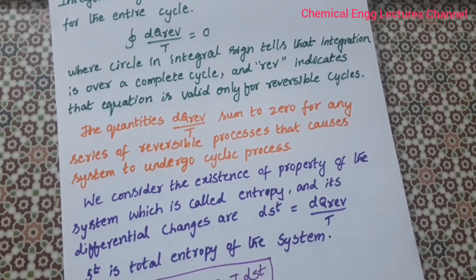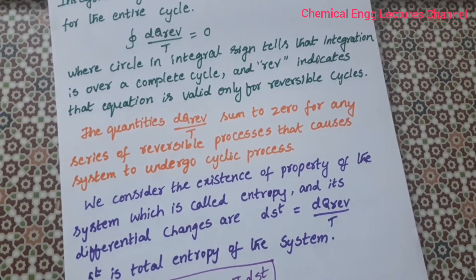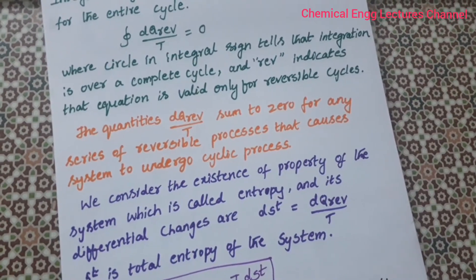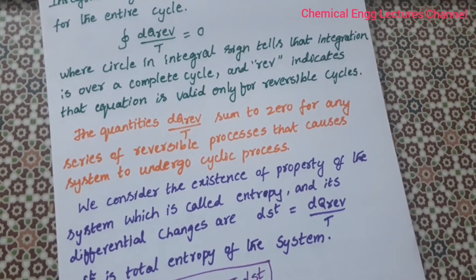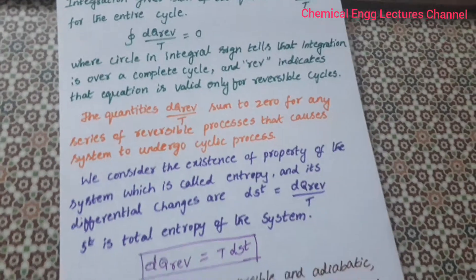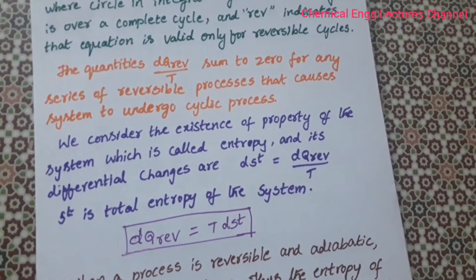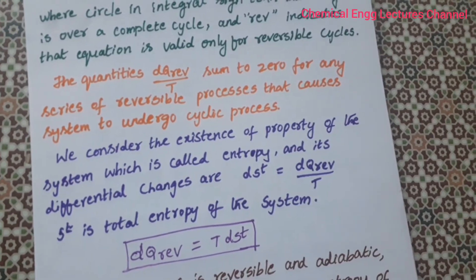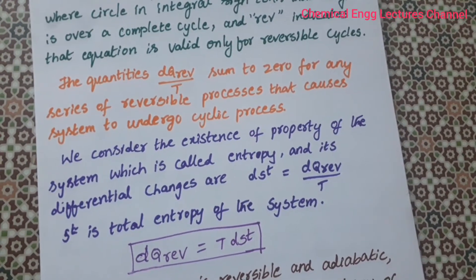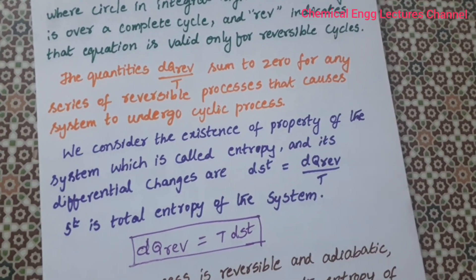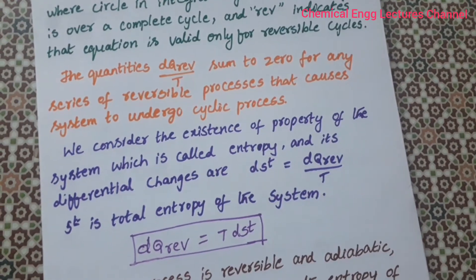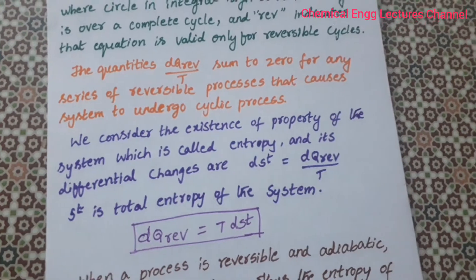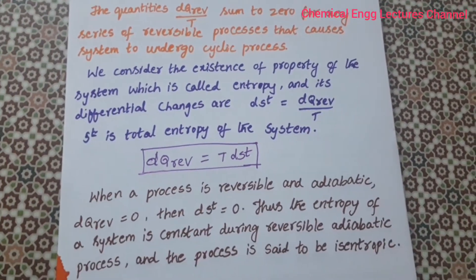The quantities DQ reversible by T sum to 0 for any series of reversible processes that cause the system to undergo a cyclic process. We now consider the existence of the property called entropy, where its differential change is given by DST equal to DQ reversible by T. Here ST is the total entropy of the system, so DQ reversible is equal to T times DST.